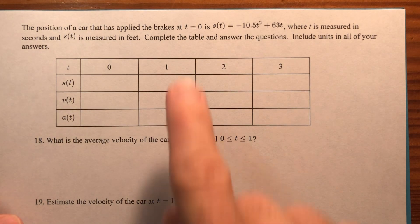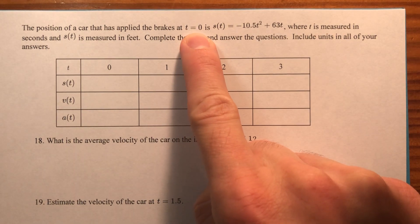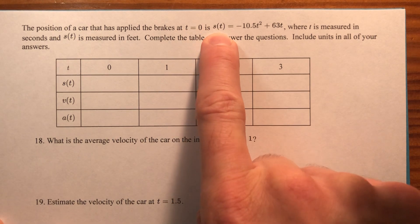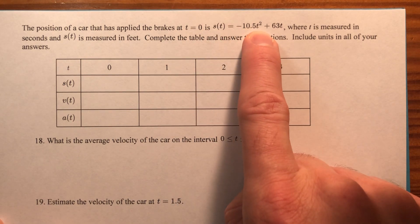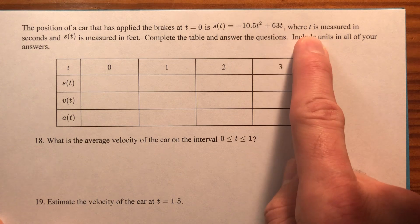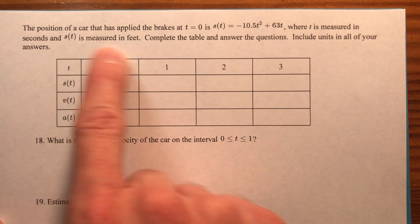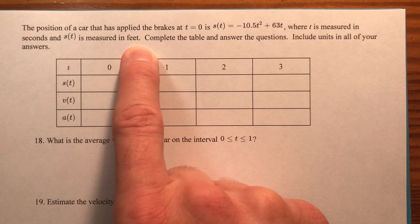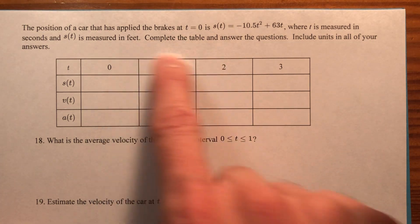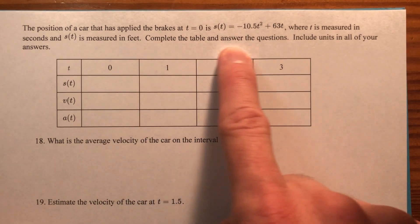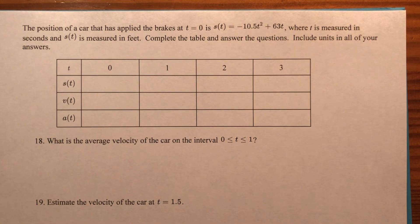The position of a car that has applied the brakes at time t equals 0, which we begin counting there, is s of t equals negative 1.5 t squared plus 63 t. t is measured in seconds and s of t is measured in feet. So the car continues to move after the brakes have been pressed. Complete the table and answer the questions, include units in all of your answers.